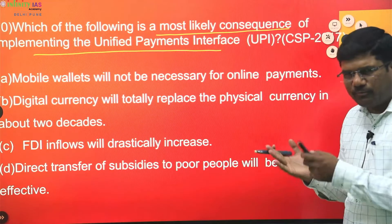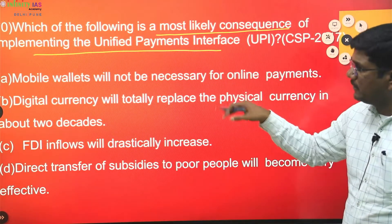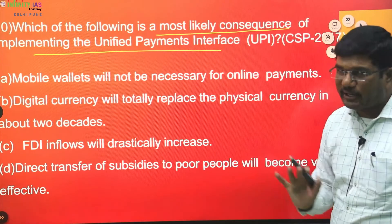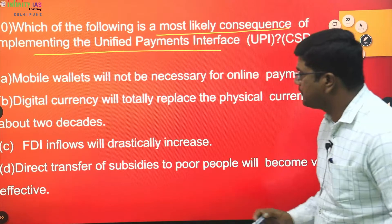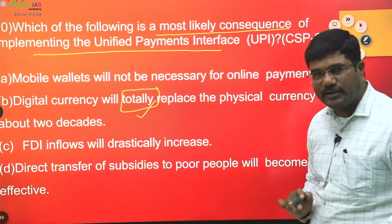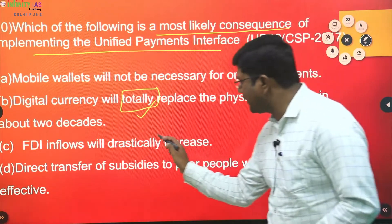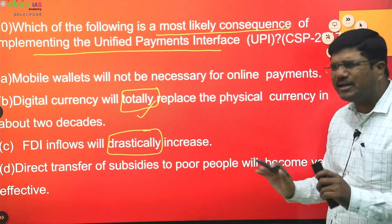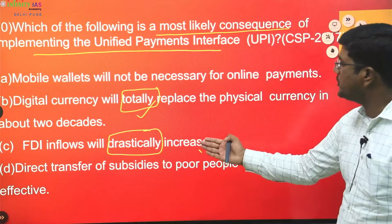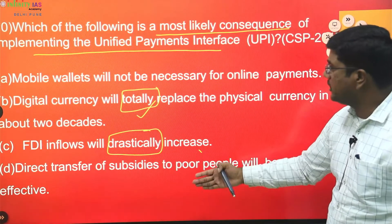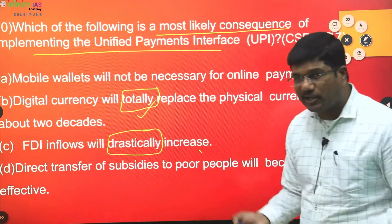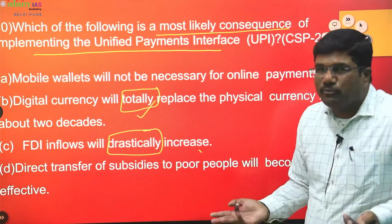Question ten: which of the following is most likely the consequence of implementing UPI? This was asked because of demonetization and digital India digital payment initiatives. Options: mobile wallets will not be necessary for online payment. Digital currency will totally replace physical currency — underline 'totally,' an extreme word. FDI inflows will drastically increase — again 'drastically,' an extreme word. So automatically you're left with options A and D.